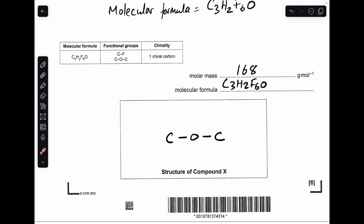Moving on to the structure for compound X — we're told it has to have a C–O–C functional group and it's also got C–F, but it also has a chiral carbon. So I'm going to make one carbon the chiral carbon, which means we've got to have four different atoms or groups attached to it. I'll start by bonding an F and an H to the chiral carbon. There are three carbons in this molecule, so another carbon will be attached to that, and then basically we just fill up the atoms we haven't used yet. One way to do it is that arrangement, and the other way is just to swap two of those groups around — and you get that structure.